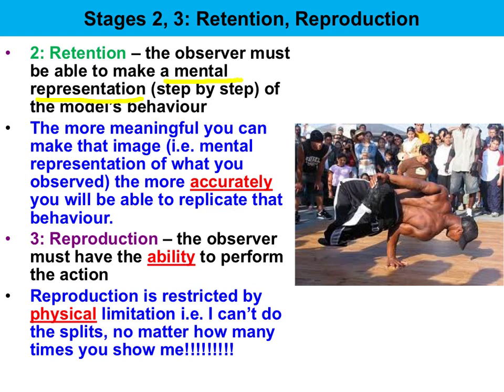Reproduction is determined by our ability to actually perform the behaviour. For instance, my son, who's 8, can't start the lawnmower. He's able to attend to the steps required — putting the lawnmower in gear, pumping in the petrol — but he's not strong enough to pull the starting cord. He's limited by his lack of physical strength.